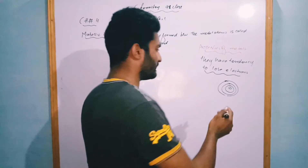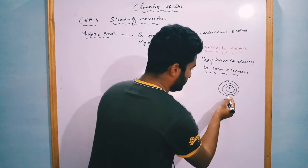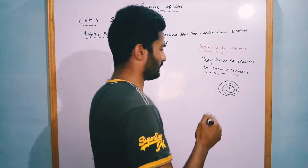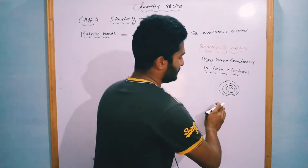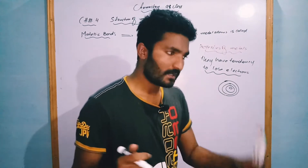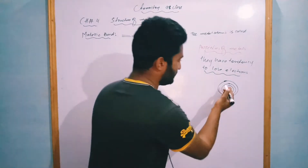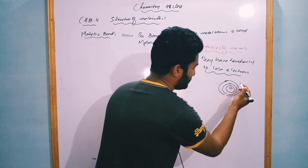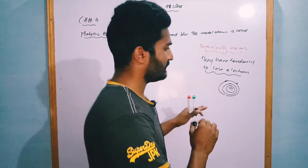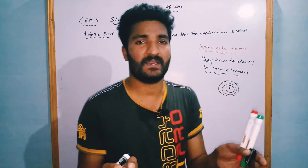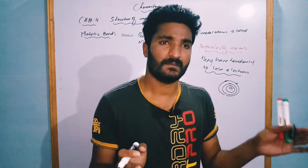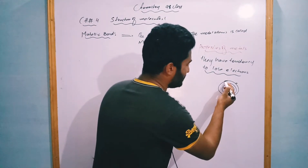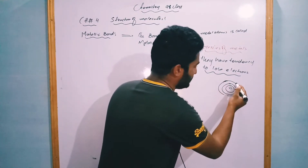The electrons in the outer shell are not tightly packed — they have a little bit of energy — that's why metal atoms have a tendency to lose electrons. The second reason is they have low ionization energy. The third reason is the electrons in the outer shell are loosely attached, meaning they are loosely bound.